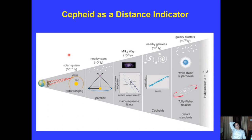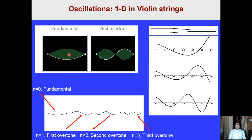Apart from Cepheids, there are many other distance indicators: radar for nearby objects, the parallax method for nearby stars, main sequence fitting using the HR diagram, and Cepheids for nearby galaxies. For galaxy clusters, other techniques like Type Ia supernovae are used for objects in distant galaxies. Pulsation and oscillation refer to the same phenomena.